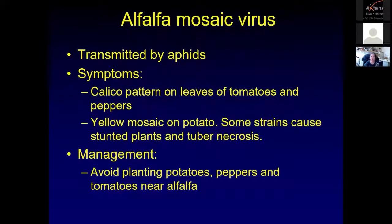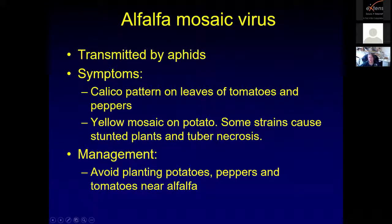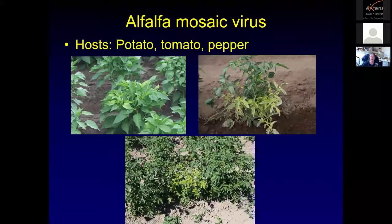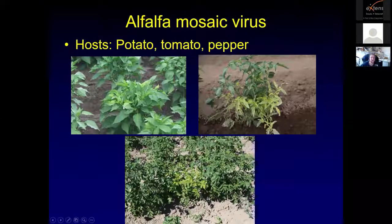Alfalfa mosaic virus is a very common virus in alfalfa in Utah. It does not cause many problems in alfalfa besides a light green/dark green mosaic pattern on the leaves. It's transmitted by aphids, but if it gets to tomatoes and peppers it can cause more severe symptoms — a calico pattern on leaves, a yellow mosaic on potatoes, and some strains can cause stunted plants as well as tuber necrosis. For management, avoid planting potatoes, peppers, and tomatoes right next to an alfalfa field, because the aphids will move it quite readily. Here you can see a tomato plant infected with alfalfa mosaic virus and a potato plant with a yellow and green mosaic pattern.